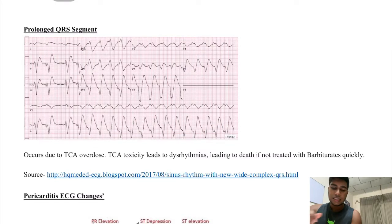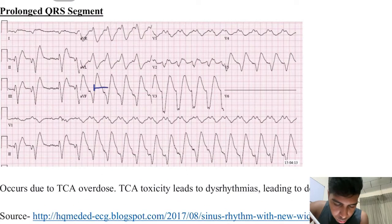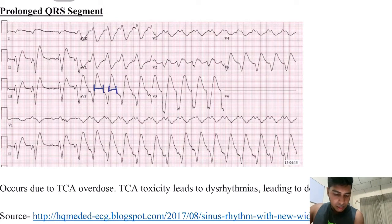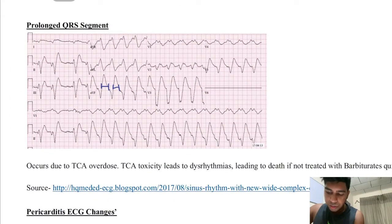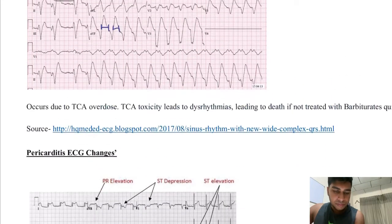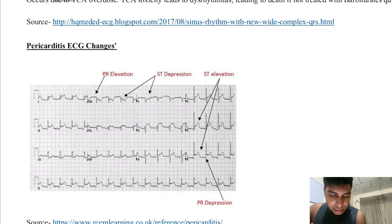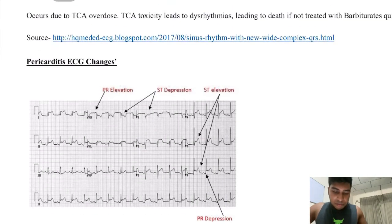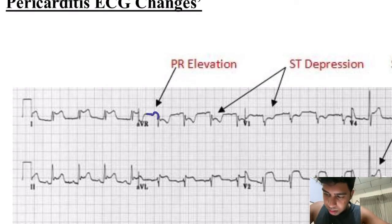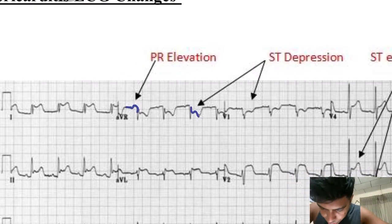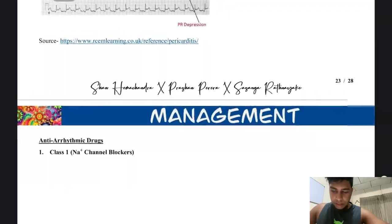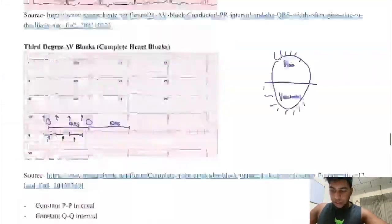Next, a prolonged QRS segment is seen with the drug TCA, which is given to treat psychiatric disorders — you get a prolonged QRS interval. These are things you need to know if you are planning to do USMLE. Next, for pericarditis, the ECG changes are PR depression and ST elevation. Now let's go back to the final review.